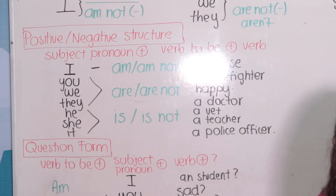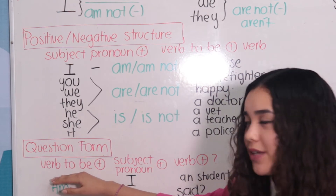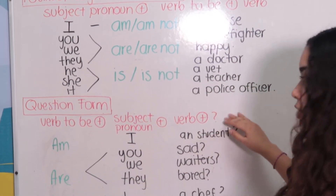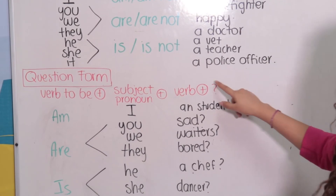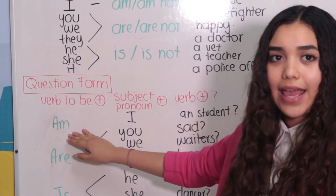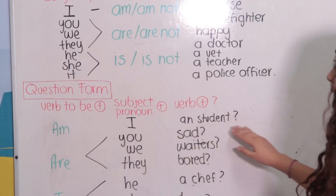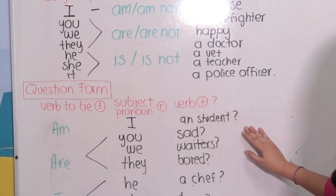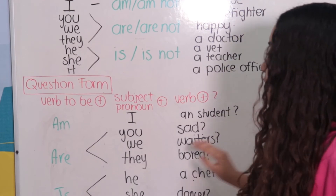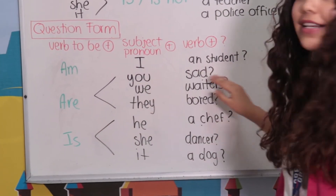And then we have the question form. It is: verb to be, plus the subject pronoun, plus the verb, plus the question mark. For example: Am I a student? Are you sad?